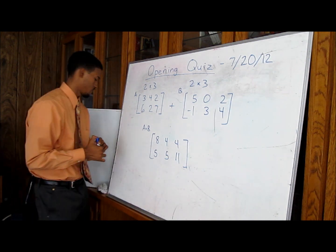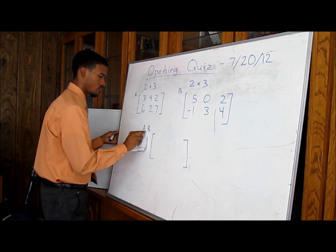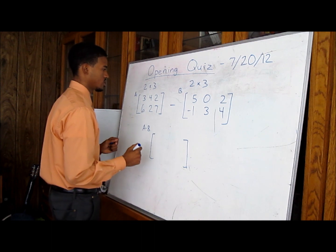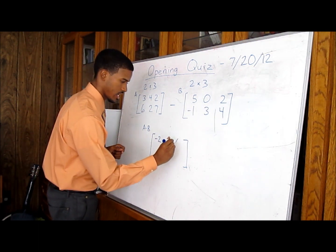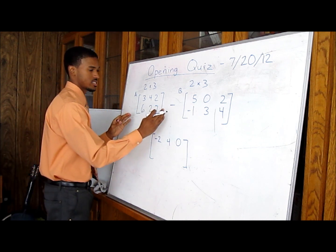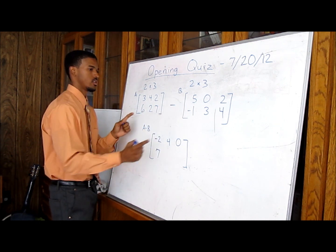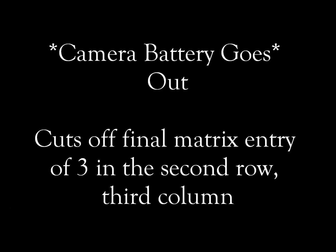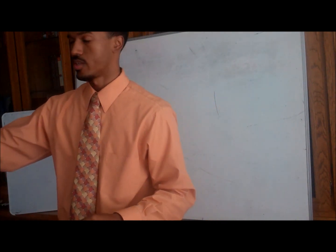Moving down to number 5, our last problem. We are using the exact same matrices, only this time we'll be subtracting. Same process — line up each entry. 3 minus 5 equals negative 2. 4 minus 0 equals 4. 2 minus 2 equals 0. Then 6 minus negative 1: subtracting a negative number automatically makes it plus, so 6 plus 1 equals 7. 2 minus 3 equals negative 1. 7 minus 4. Please go ahead and hand in your quizzes — pass them to the front of the room.